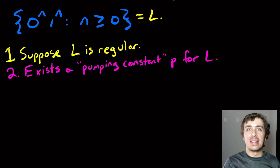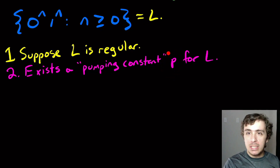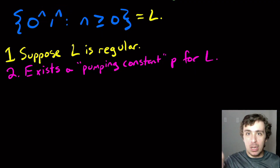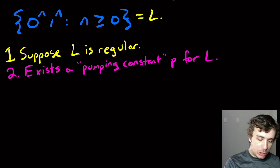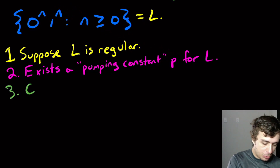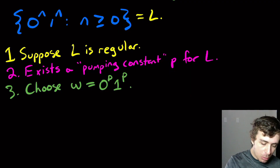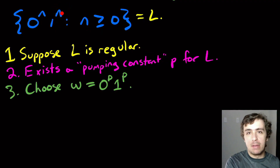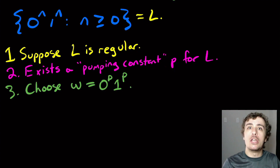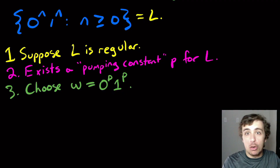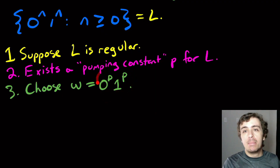Now we need to pick a string in the language of total length at least P. The typical strategy is to substitute P into the exponent. Here, n is just the variable, so we choose the string w = 0^P 1^P. I'm purely substituting P in for n. P is some unknown number — it could be 10 trillion — but this guarantees the string length is at least P; in fact at least 2P.